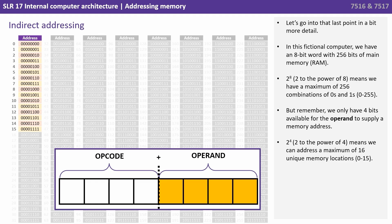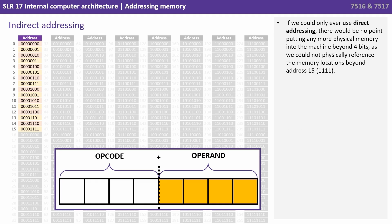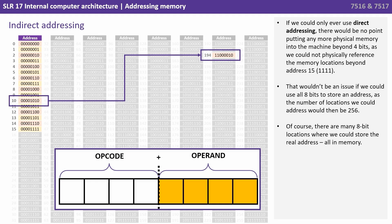That's a lot smaller. If we could only ever use direct addressing there'd be no point putting any more physical memory into the machine beyond 4 bits, as we could not physically reference the memory locations beyond the 15th address, 1111. That wouldn't be an issue if we could use all 8 bits to store an address, as the number of locations we could then address would be 256.